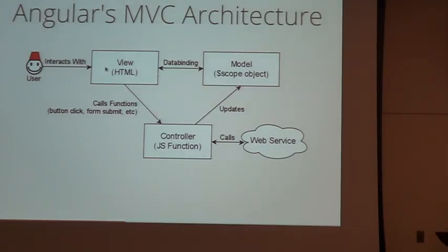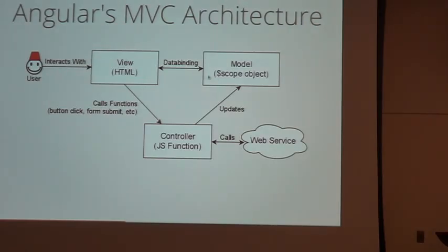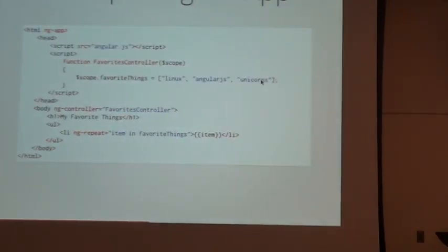In Angular: the view is just HTML, the controller is a normal JavaScript function — no special AngularJS stuff to extend. The model uses a dollar-sign scope object, which is basically just an empty object. Any data we put into that scope object is then available for the view to render. Let's drive this home by looking at some actual code.